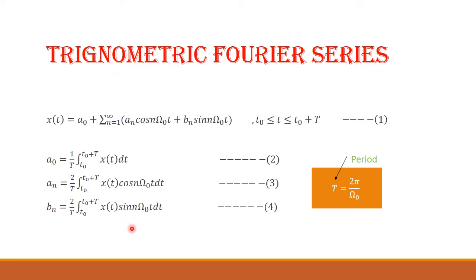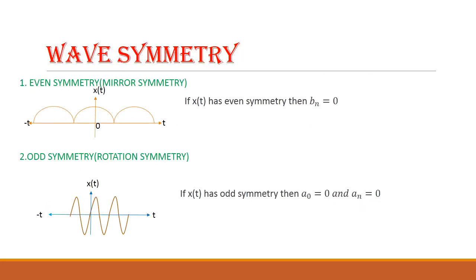By studying these formulas, you can solve the trigonometric Fourier series problems. Before solving problems, we should have a basic idea about wave symmetry. If a signal exhibits even symmetry, then we can directly substitute bₙ = 0 without calculating it using the formula.